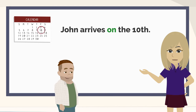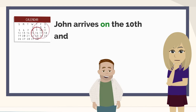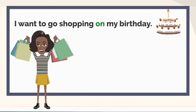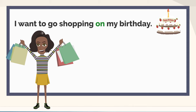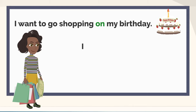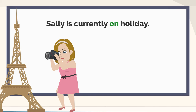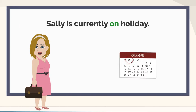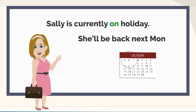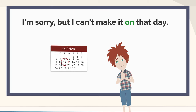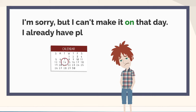John arrives on the 10th, and he'll be here for one week. I want to go shopping on my birthday — I'm going to buy myself a lot of expensive things. Sally is currently on holiday; she will be back next Monday. I'm sorry, but I can't make it on that day — I already have plans.